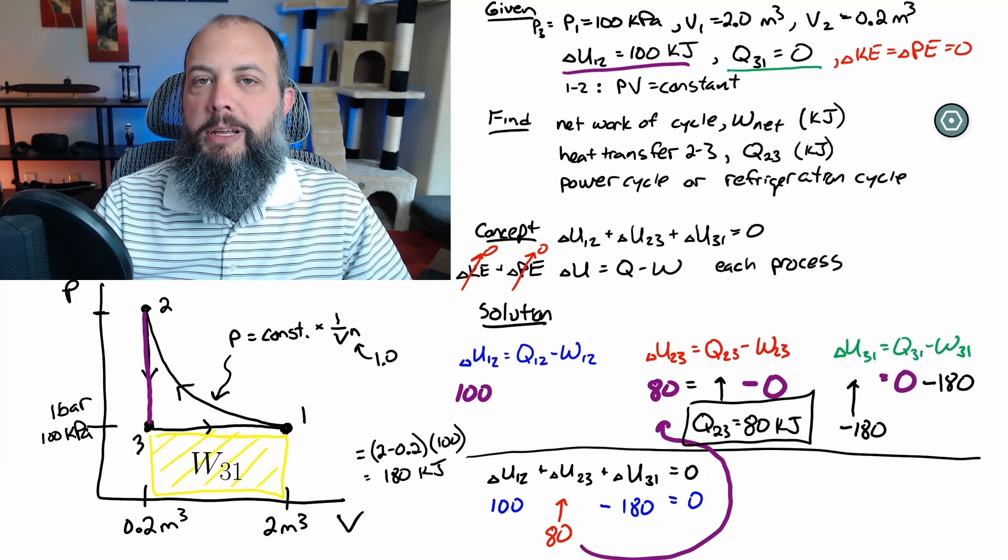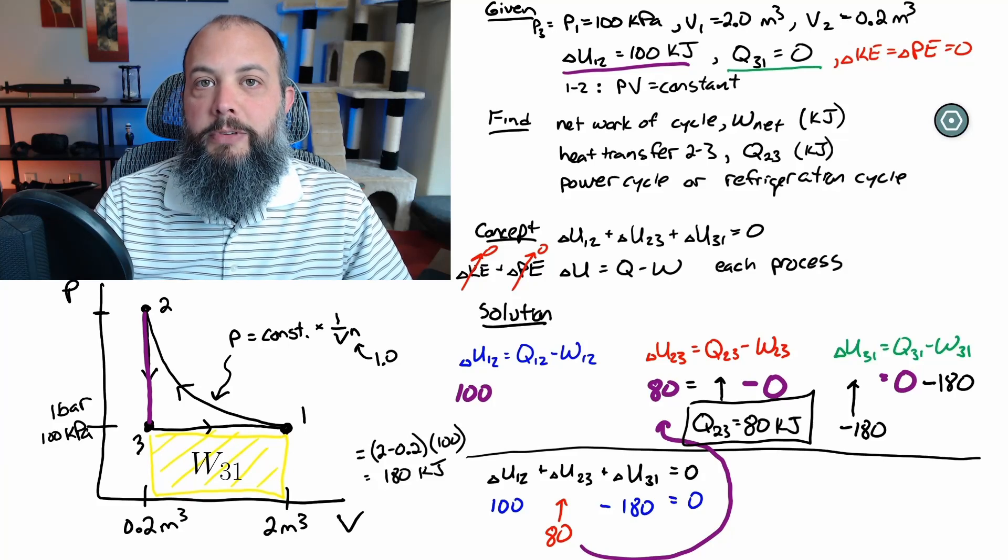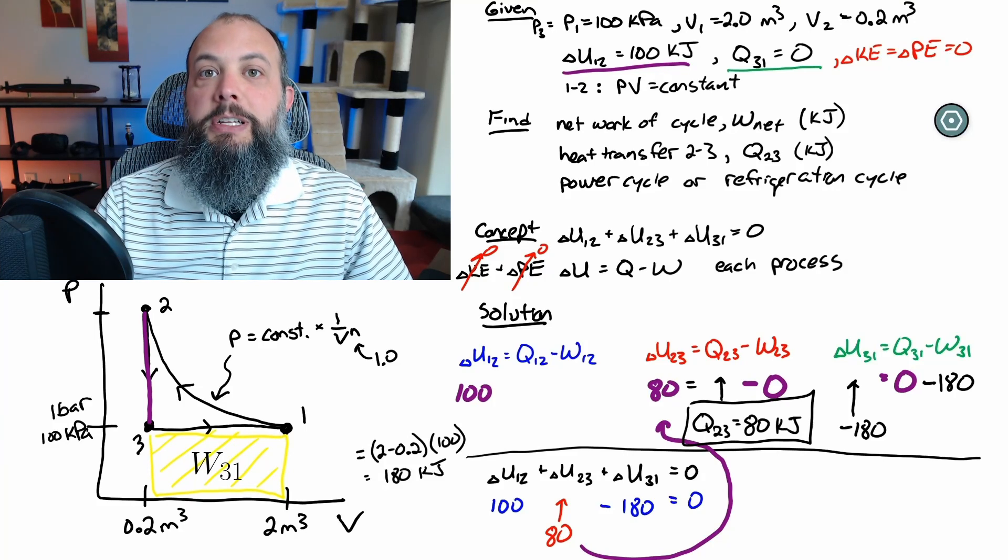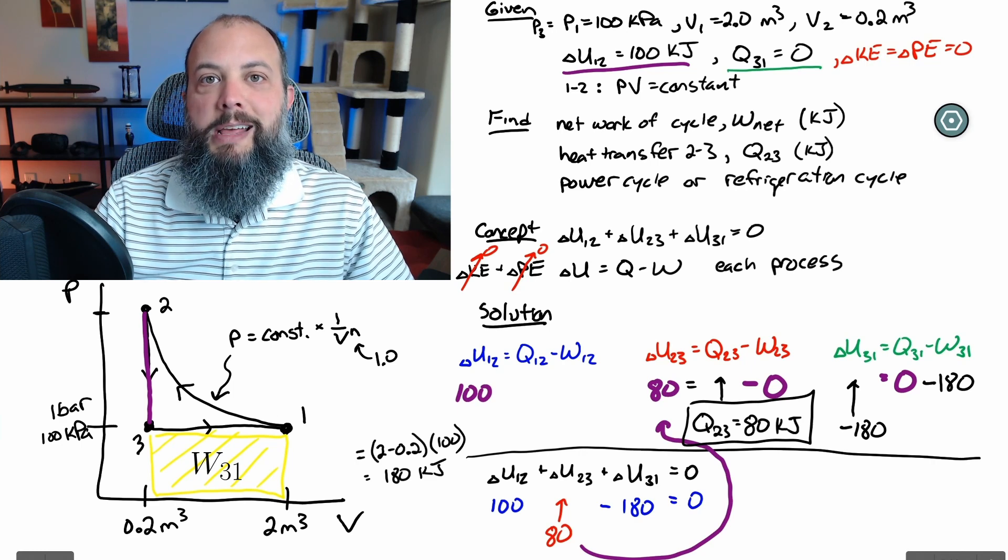Now I've delayed dealing with the polytropic process as long as we can now it's the only thing left so we're going to have to look at process one to two we're going to have to find work as area under that curve and since it's a curve we have to use calculus you're not going to be able to do it as just a rectangle like for the other one.